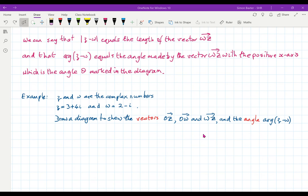So far as the angle goes, the argument of Z minus W, this is where in particular I have to think of the number Z minus W as the vector WZ. Then the argument of Z minus W, I just look at the vector WZ and take the angle between WZ and the positive X axis.